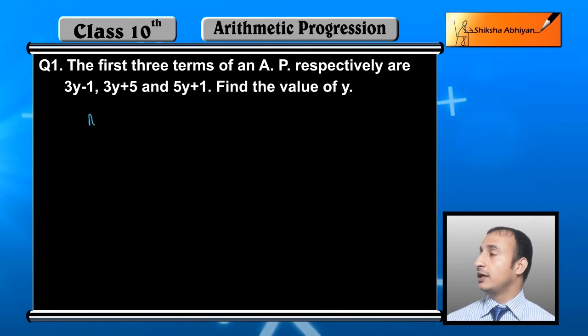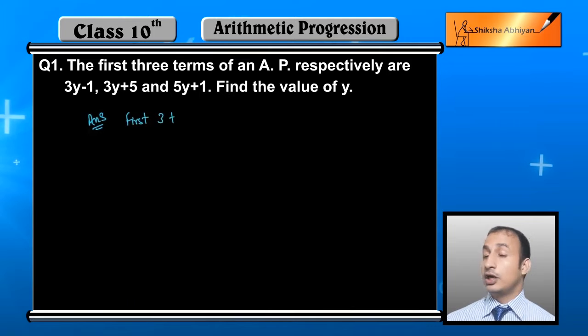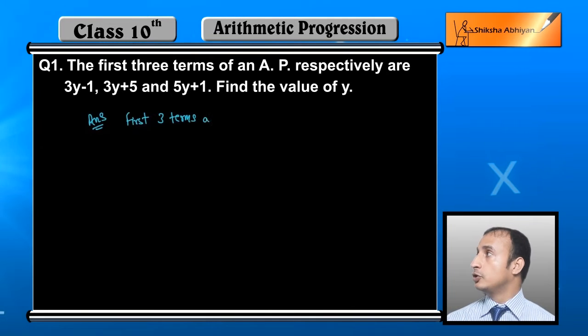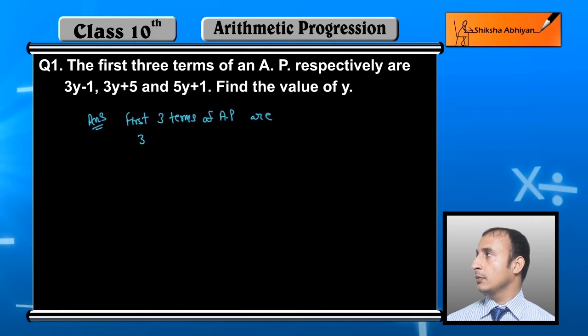Students, if these three terms are arithmetic, then their common difference will be the same. So the three terms of AP given are 3y-1, 3y+5, and 5y+1.